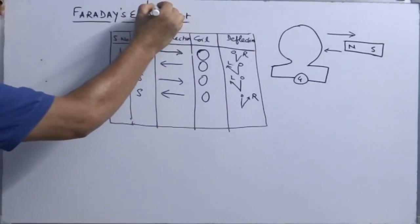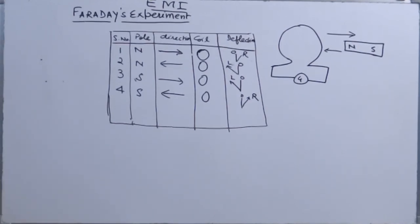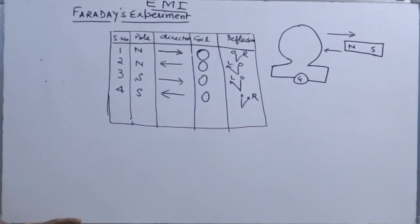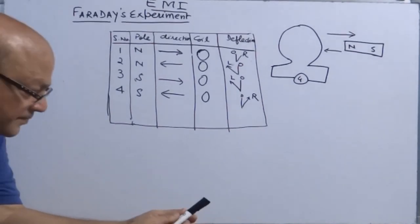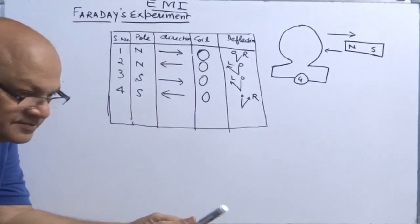What is electromagnetic induction, or EMI? It is a phenomenon of inducing an EMF or current in the coil due to relative motion between the coil and the magnet.